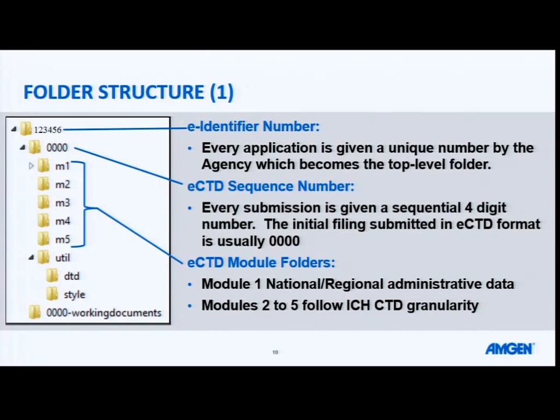The next folder will be an eCTD sequence number. This is a sequential four-digit number, and it often starts with a 0000 folder. The next set of folders will map out to your ICH structure, so your modules 1 through 5, and within them you will have subfolders to the ICH table of contents. It's important to note that these folders are only present in your sequence folder if you are submitting content. You do not put empty folders into your submission.